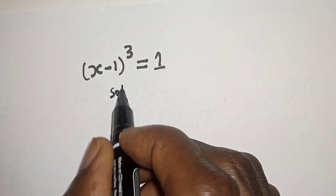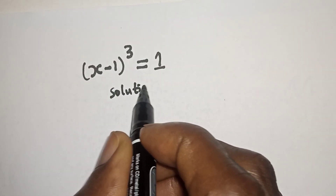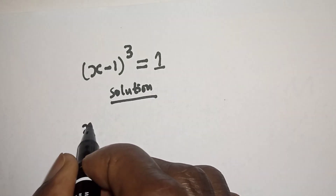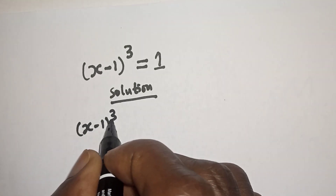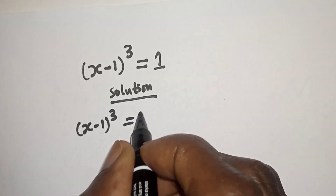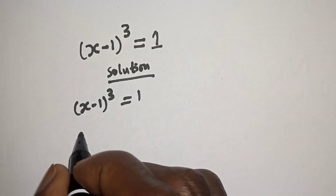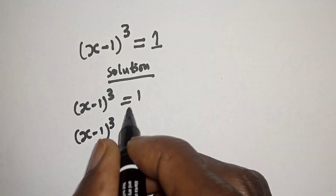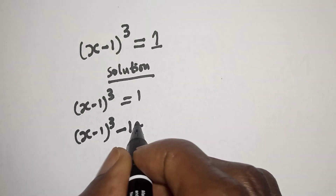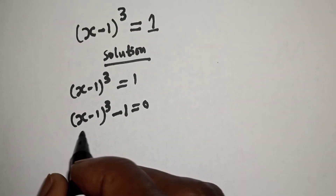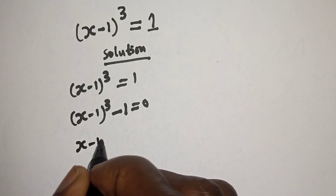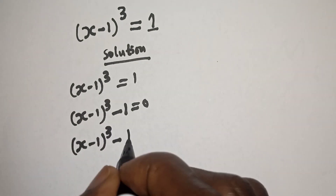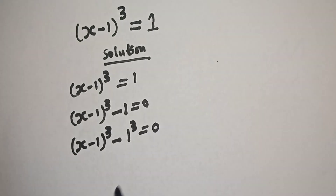Solution. We have S minus 1 raised to power 3 is equal to 1. Then, S minus 1 raised to power 3. If you bring this 1 to this side, minus 1 is equal to 0. So, S minus 1 raised to power 3 minus 1 raised to power 3 is equal to 0.